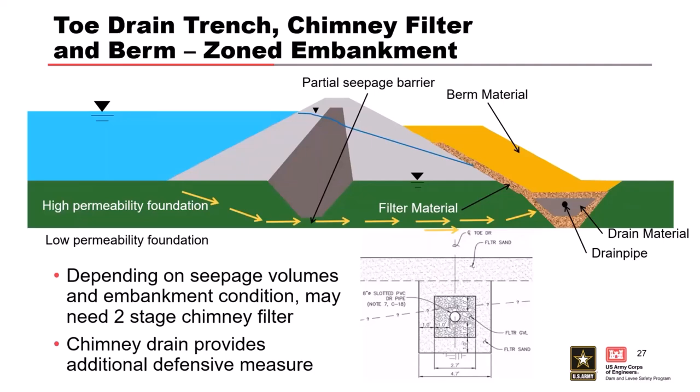The chimney gives you defensive measures for the embankment, and you've addressed the foundation. Most of these dimensions are based on constructability. If your seepage analysis says you only need two inches of filter sand and four inches of gravel, that's really hard to build with an excavator. You'll also get contamination — assume you're going to lose a few inches at the top and bottom of the sand. A foot thickness is kind of your minimum for filter and drain materials.